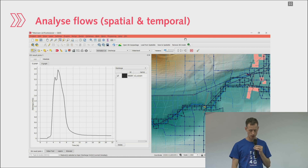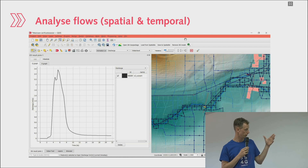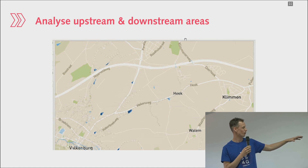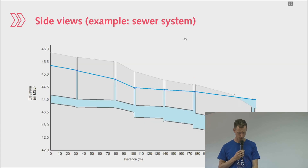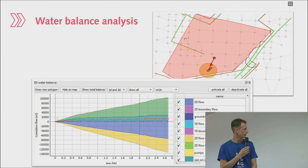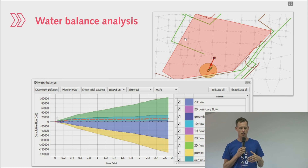The functionalities we offer include the ability to analyze flows in both time and space. Users can click on the map and immediately see which parts are upstream and downstream of where they click. They can make side view visualizations and water balance analyses of specific polygons they draw. Many of these components — like background maps and computational grid features — are essentially GIS features.